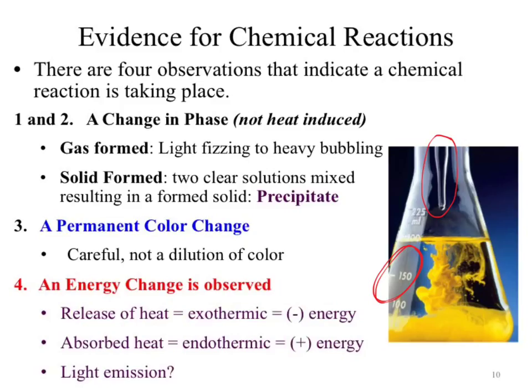If I mix two liquids at the same temperature and all of a sudden it gets hotter, it's getting hotter because energy was released from the reaction — that's an exothermic reaction. For those of you moving into Chemistry 151, you'll do mathematics with that release of heat; the sign on that energy is negative because you've lost heat. If we mix those two liquids and it gets colder, the reaction is sucking heat out of the surroundings — absorbing that energy. That is referred to as an endothermic reaction, and we have an increase in energy, so a positive energy value.